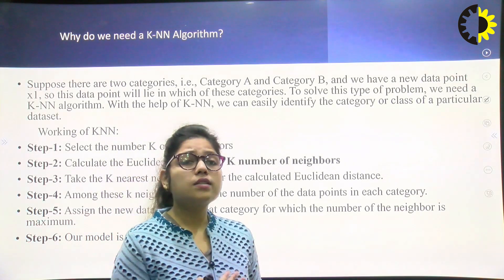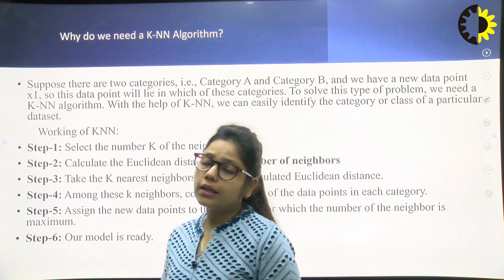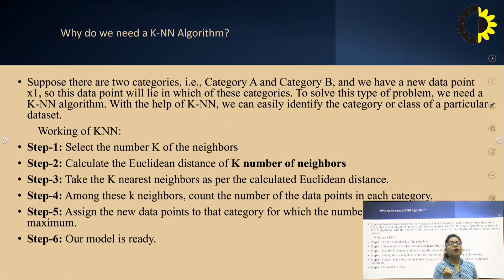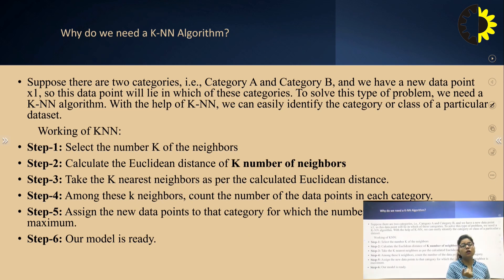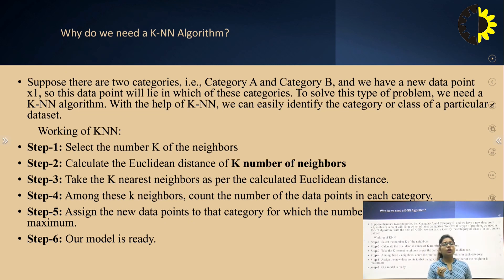How does KNN algorithm work? First, select the number K of neighbors — in most questions, the value of K is already given. Next, calculate the Euclidean distance for K neighbors. Euclidean distance uses the observed value minus the actual value; the observed value is given and the actual value is the data point for which we need to calculate. Take the K nearest neighbors as per the calculated Euclidean distance. Among these K neighbors, count the data points in each category and assign the new data point to the category for which the number of neighbors is maximum.